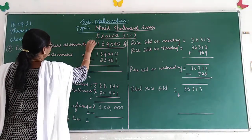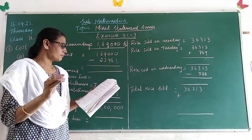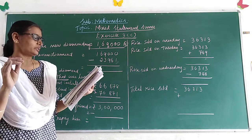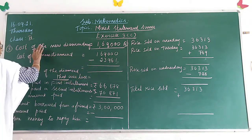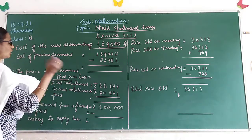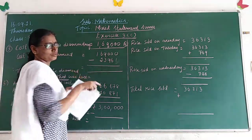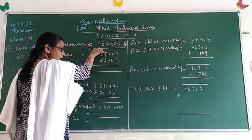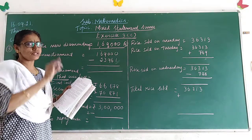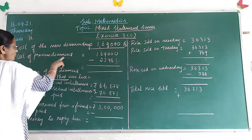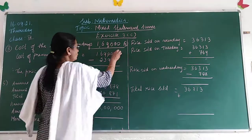How will you write the statement here, children? First, write the cost of the diamond ring. The cost of the new diamond ring is 1,69,000. What was the price of the previous diamond ring? You have to find the cost of the previous diamond ring. When you subtract: new ring cost minus the amount more, you will get the cost of the previous one.